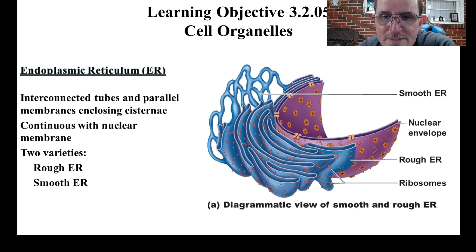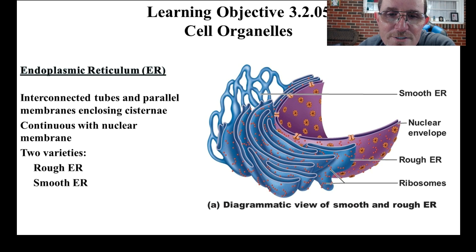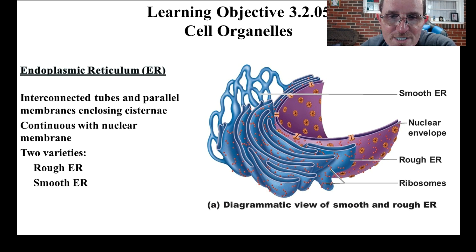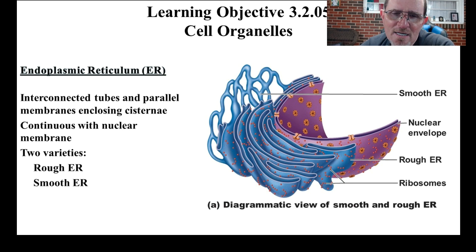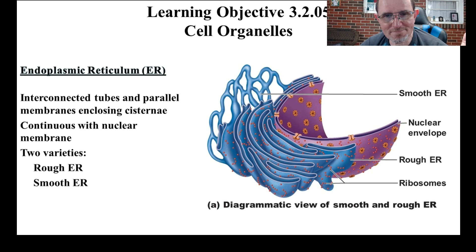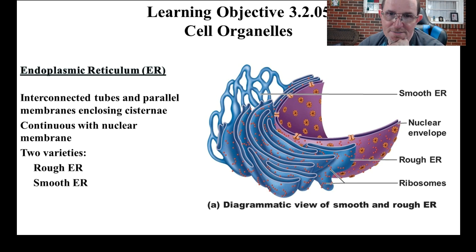If you look at the plasma membrane of the nucleus — the nuclear envelope — it actually just kind of turns into the rough ER. So things can go out of the nuclear pores and go straight into it. The rough ER looks like a bunch of pancakes — it's flattened sacs. The smooth ER, which does not do protein synthesis, looks more like a bunch of interconnected tubes. These things are continuous with the nuclear membrane — the nuclear membrane basically turns into the ER.